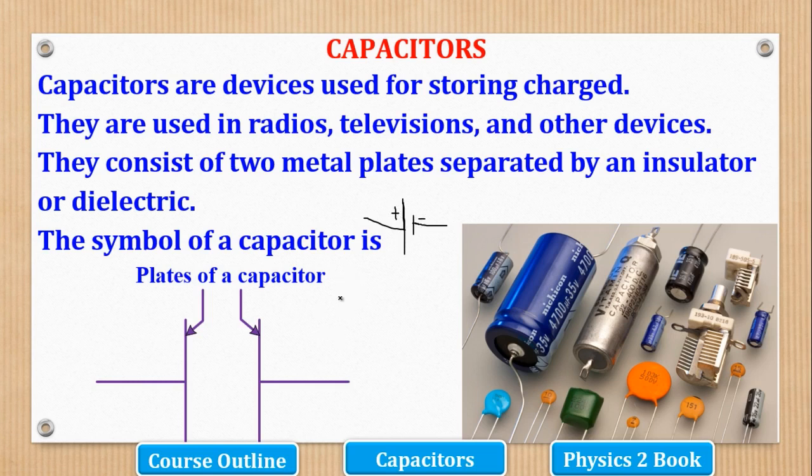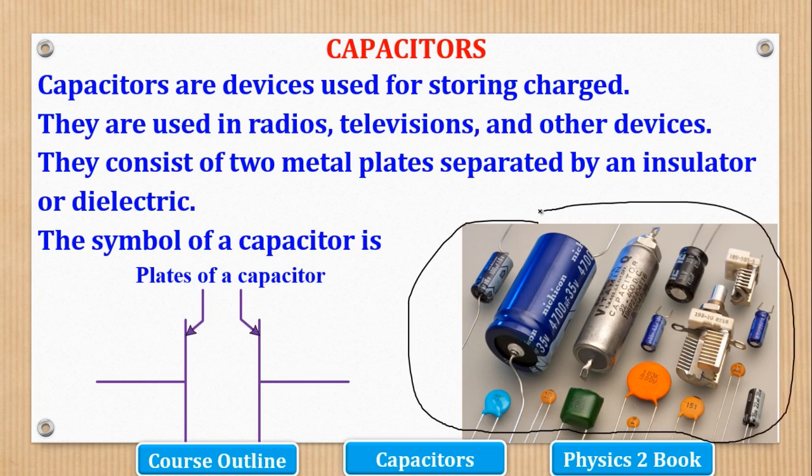But when it comes to a capacitor, both must be of the same height, as you can see it here. They should be of the same height. So that's the difference between the symbol for a capacitor and that of a dry cell. So these are what we call the plates. And now what you see here is a diagram of real life capacitors. So these are the various types of real life capacitors. I think if you open your radio, you'll be able to see most of these gadgets here. So those are what we call capacitors.